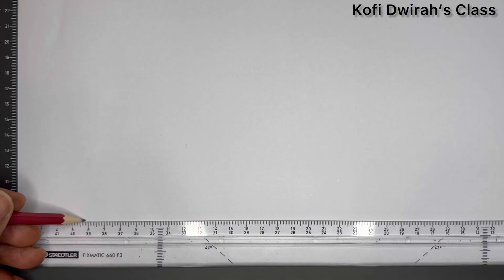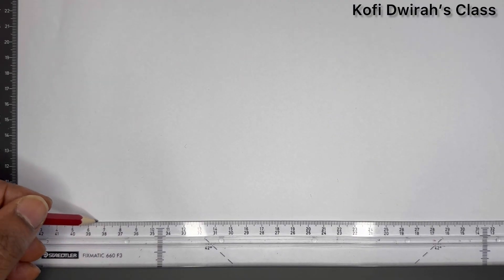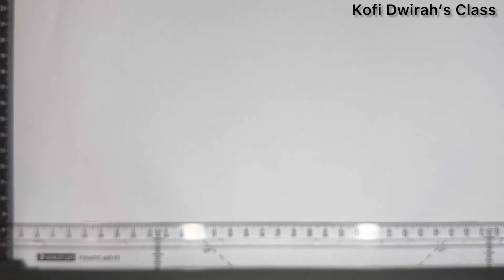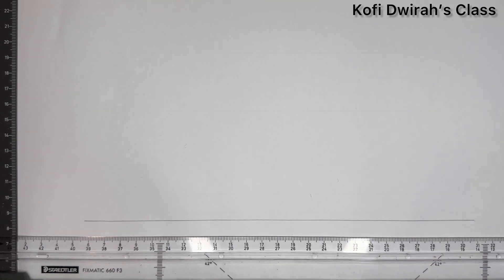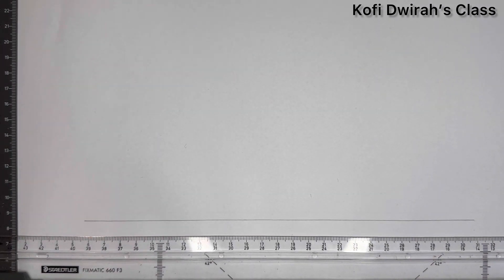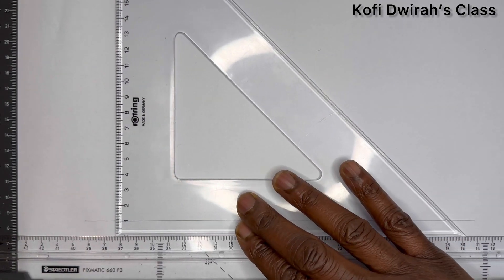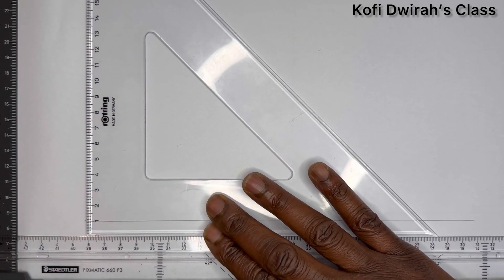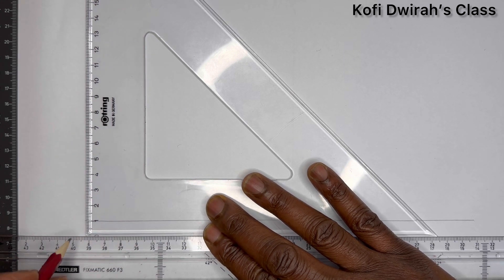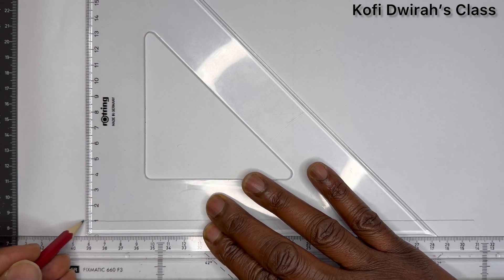So this is what we are going to do today. We start by drawing our line, a horizontal line. Then with our set square — either a 45-degree set square or a 60-degree set square — we draw our perpendicular line.